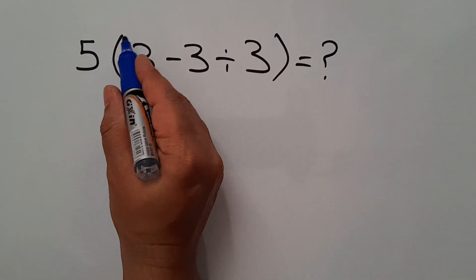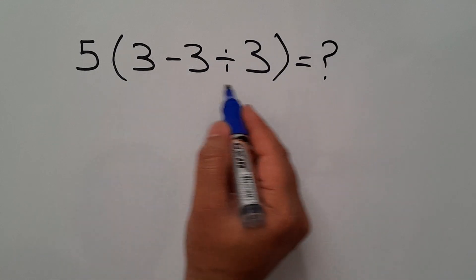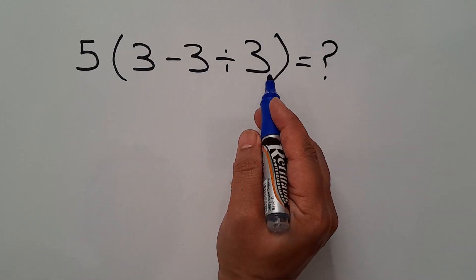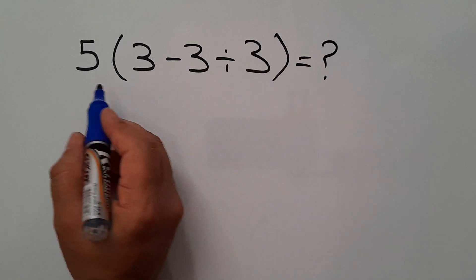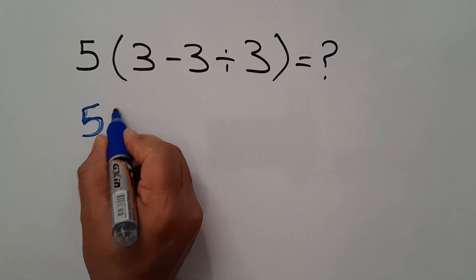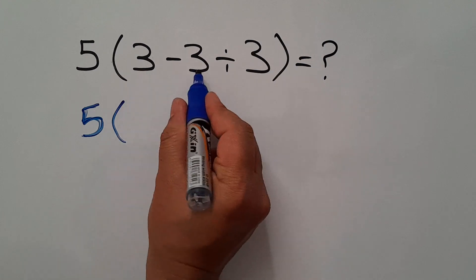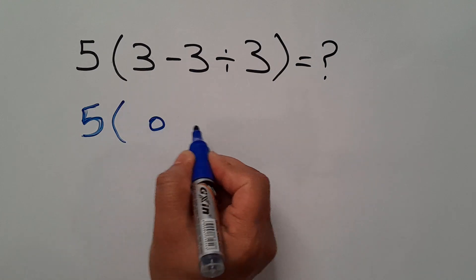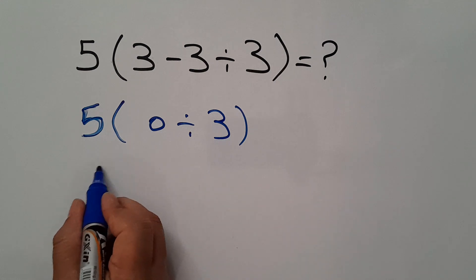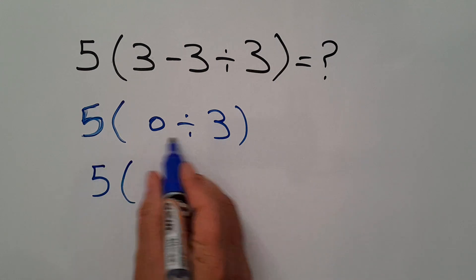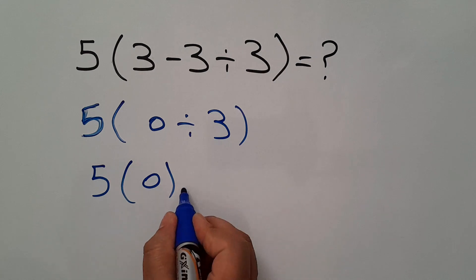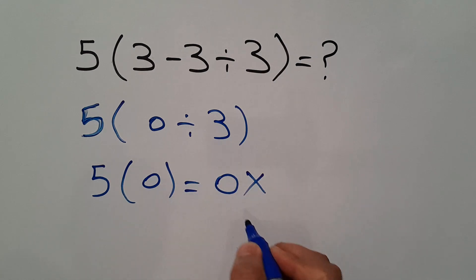5 times these parentheses, and inside these parentheses we have 3 minus 3 divided by 3. Are you ready to solve? Let's get started. 5 times — 3 minus 3 gives us 0, and 0 divided by 3, this is equal to 5 times just 0, and this is equal to 0. But this answer is not correct.